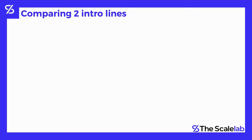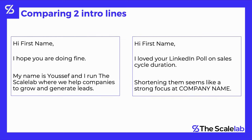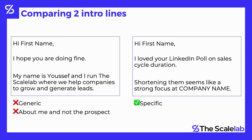Let's compare two intro line formats. On one hand: 'Hi First Name, I hope you're doing fine. My name is Youssef and I run the Scale Lab where we help companies to grow and generate leads.' On the other hand: 'Hi First Name, I loved your LinkedIn poll on sales cycle duration. Shortening them seems like a strong focus at Company Name.' The first is generic and about me, not the prospect. The second is specific — it mentions something the person has done and is focused on the prospect, which helps me stand out compared to all other generic emails.